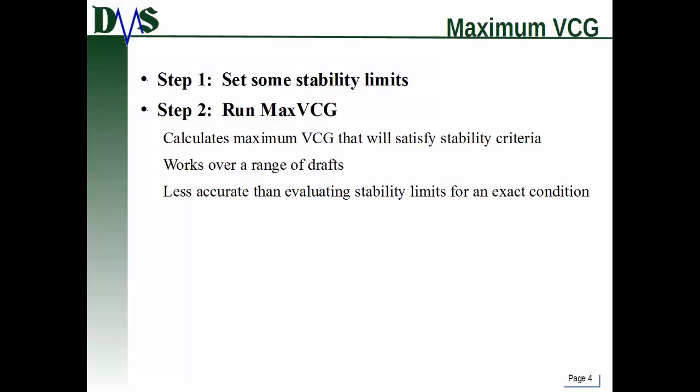So the max VCG command. There are two steps involved. Step one, you have to set up some stability limits beforehand — you have to define a set of limits, otherwise this command won't work. Then you run the maximum VCG command, and what that does is calculate the maximum VCG that will satisfy those stability criteria.